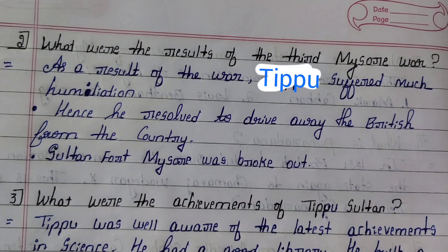Second question: What were the results of the Third Mysore War? Answer: As a result of the war, Tipu suffered much humiliation. He resolved to drive away the British from the country, which led to the Fourth Anglo-Mysore War breaking out.